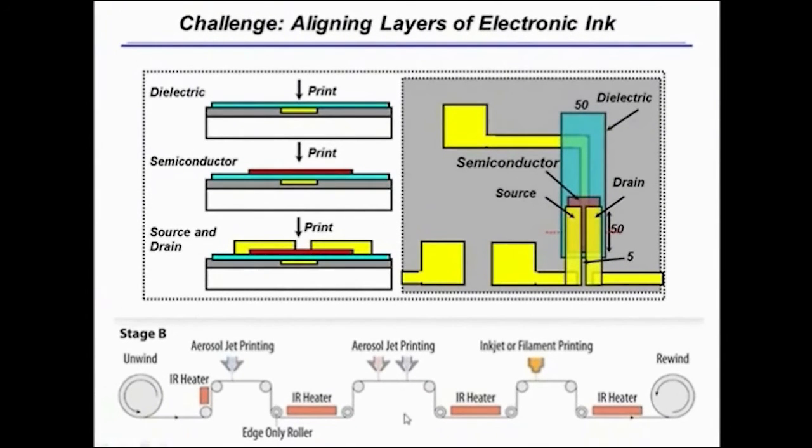Below shows a proposed scheme of roll-to-roll processing using aerosol jet printing steps to put down the various materials with IR heating to dry the inks in between. This is an example of how this might be done.